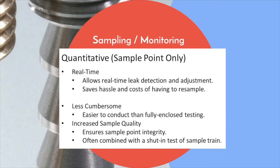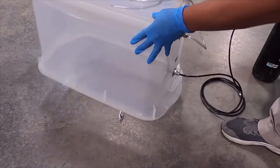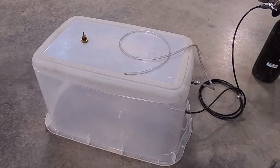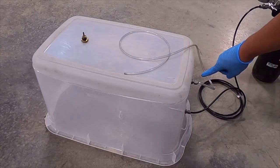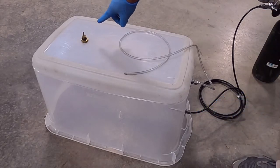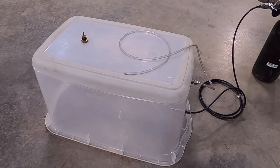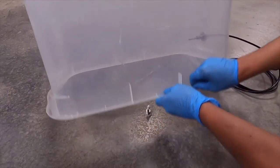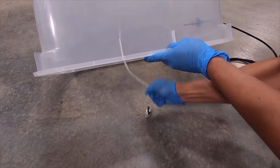Quantitative helium leak testing of the sample point. This leak testing method allows for leaks to be corrected prior to sample collection, ensuring sample quality and helping avoid costly resampling. Less cumbersome than the fully enclosed testing we will demonstrate later, this method is often combined with the shut-in test of the sample train. Firstly, the sample point, in this case a vapor pin, is covered by the shroud. This shroud has three ports, one for measuring helium levels in the shroud, a second for supplying helium to the shroud, and a third for purging the sample point. Connect the purge tubing to the sample point securely.